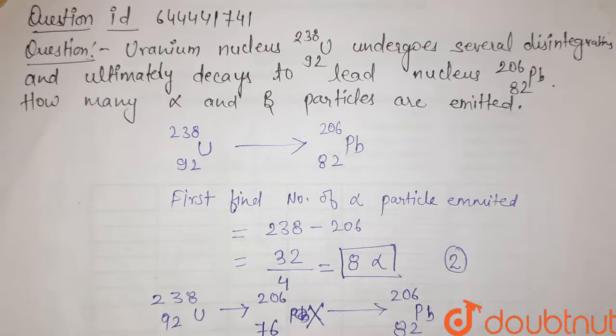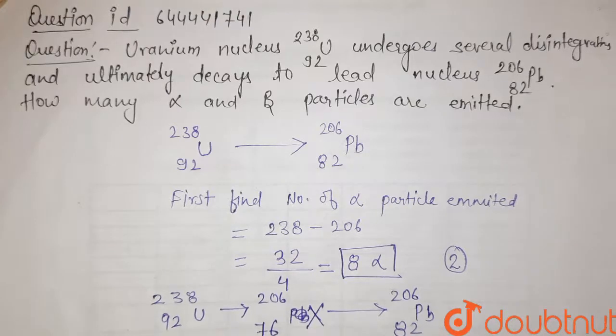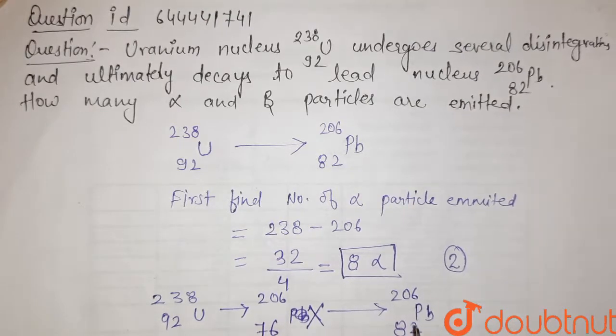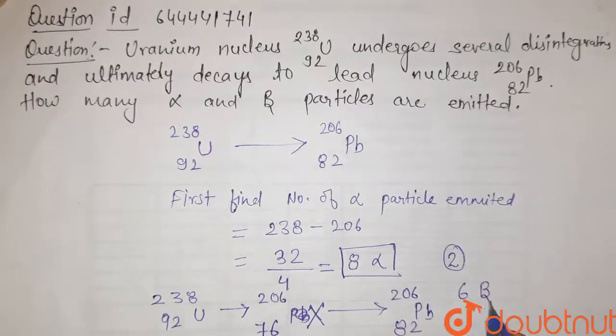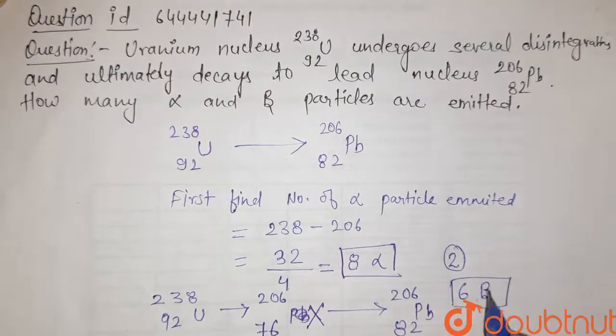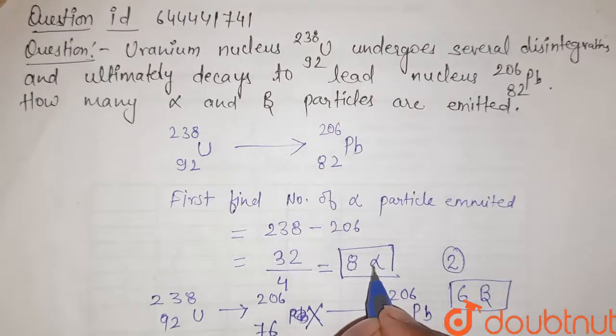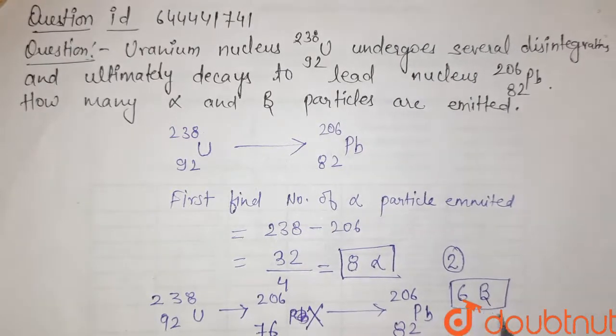So here we clearly see that the atomic number increases by 6 units, so there is an emission of 6 beta particles. So our answer is we get 8 alpha emission and 6 beta emission.